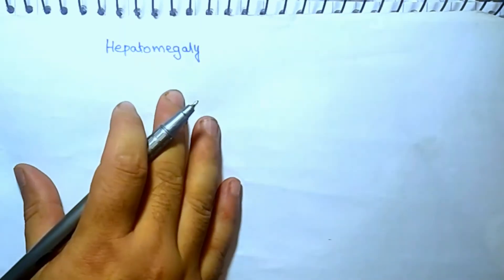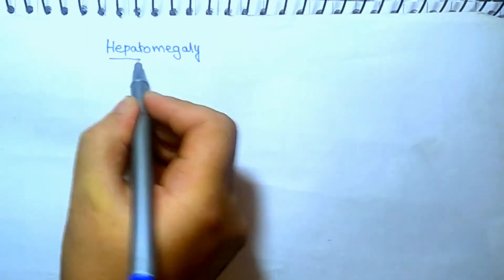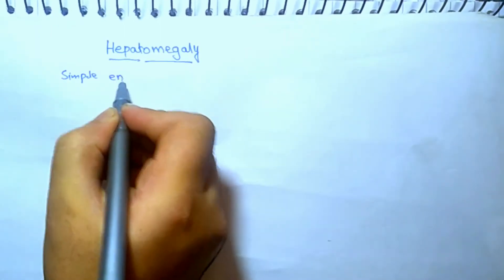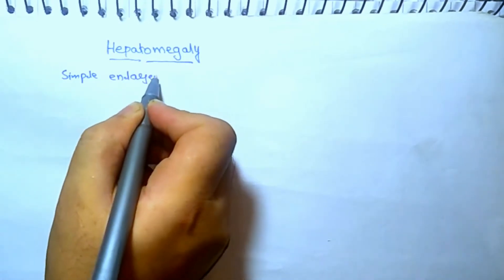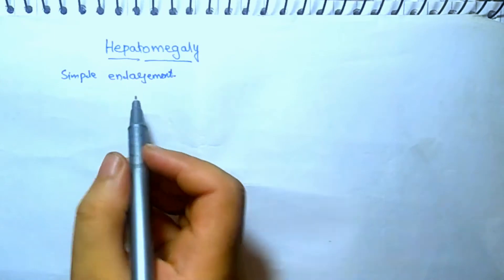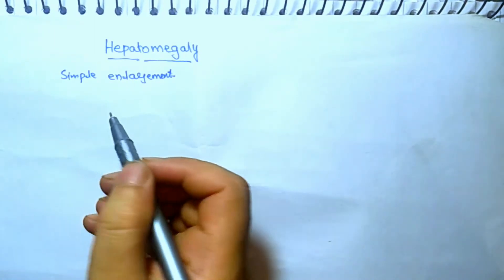In this lecture we will discuss hepatomegaly, what are the causes of hepatomegaly, and what are the types and investigations. Hepatomegaly means simple enlargement of liver. The enlargement of liver is due to the following causes.